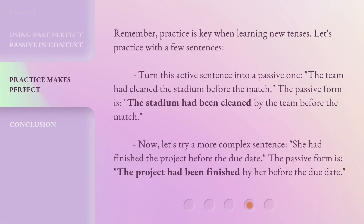Remember, practice is key when learning new tenses. Let's practice with a few sentences. Turn this active sentence into a passive one: 'The team had cleaned the stadium before the match.' The passive form is: 'The stadium had been cleaned by the team before the match.' Now, let's try a more complex sentence: 'She had finished the project before the due date.' The passive form is: 'The project had been finished by her before the due date.'